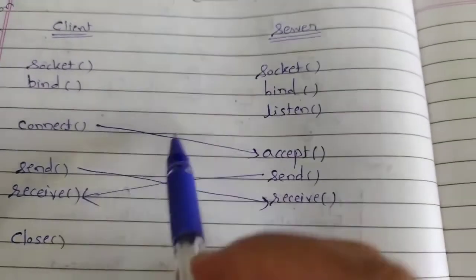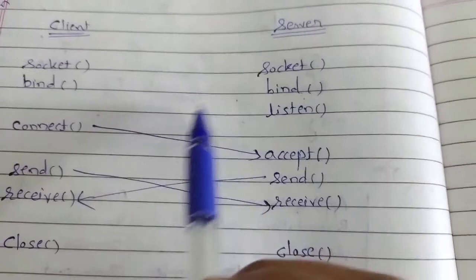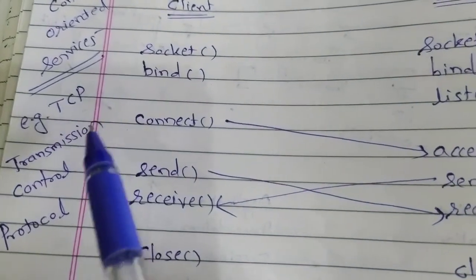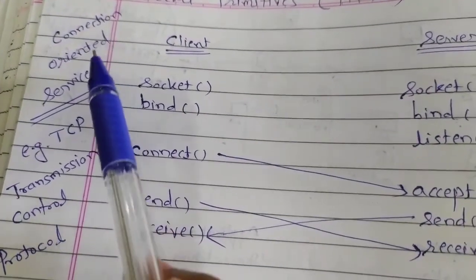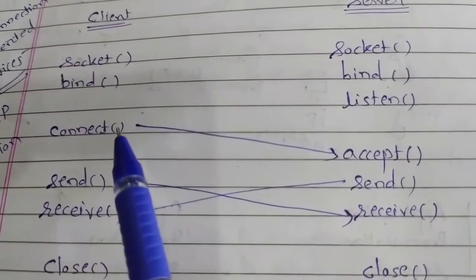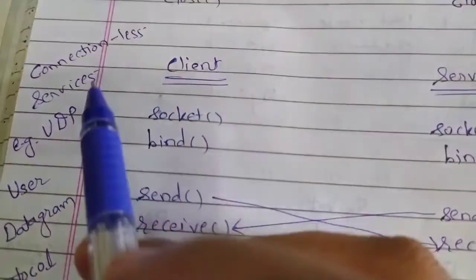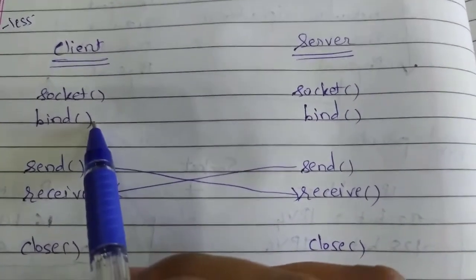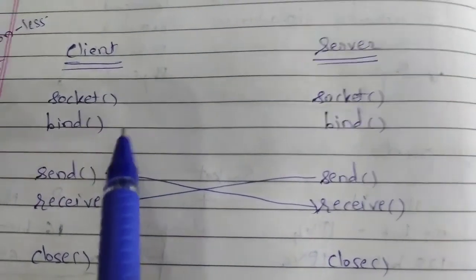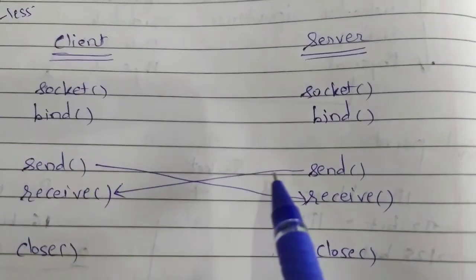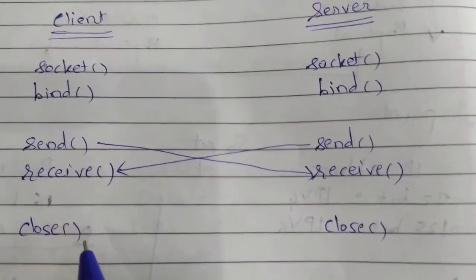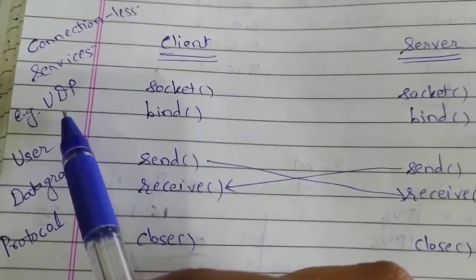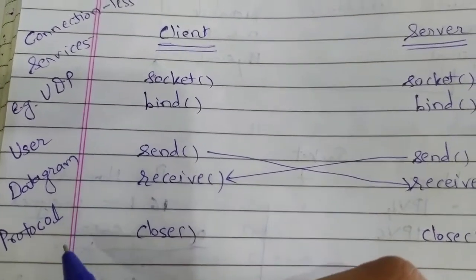Since we are manually establishing a connection between client and server, this is called connection-oriented service — for example, TCP (Transmission Control Protocol) uses connection-oriented services. If we remove the connect, listen, and accept steps, it becomes connectionless service. In connectionless services, after socket and bind, we can directly send and receive messages and then close the socket. For example, UDP (User Datagram Protocol) uses connectionless services.